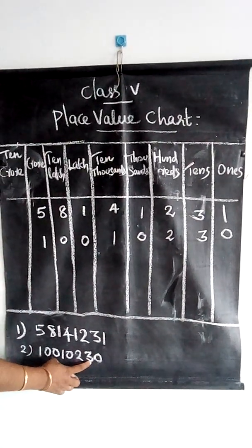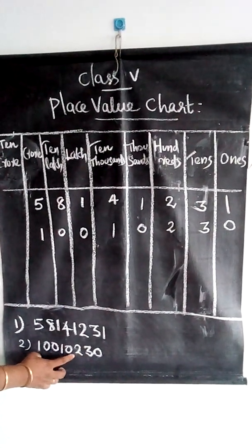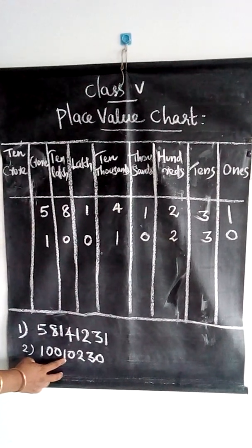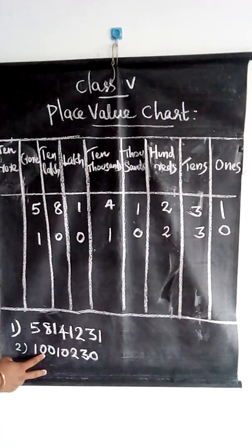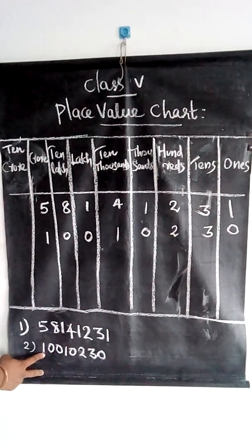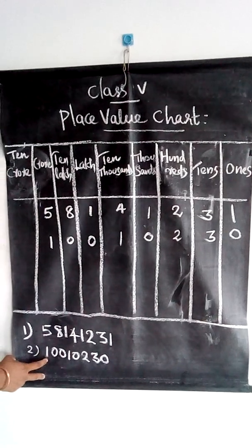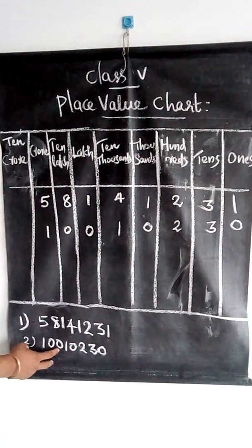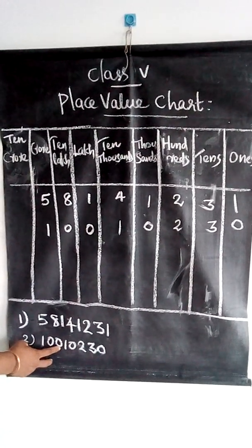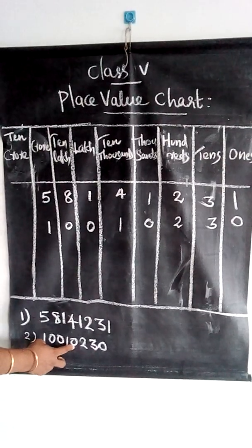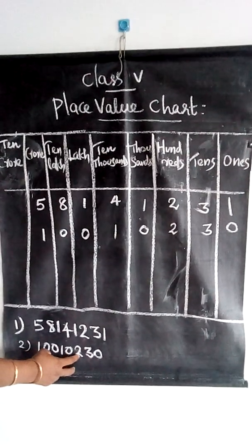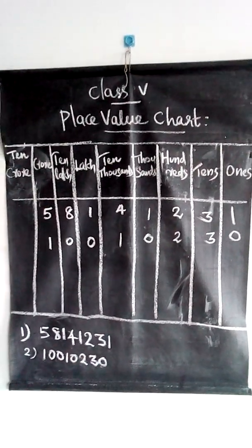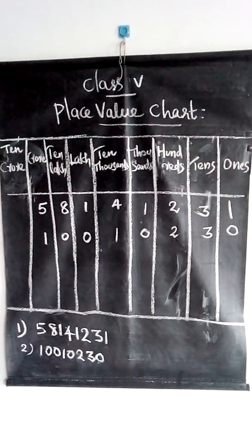The columns are: ones, tens, hundreds, thousands, ten thousands, lakh, ten lakh, crore. So the number name is 1 crore. Since the lakh place is 0, we read it as 1 crore, 10,230. That is the number name of this number.